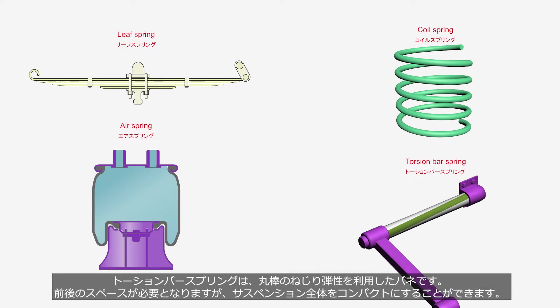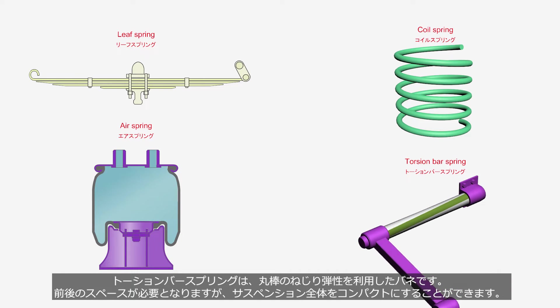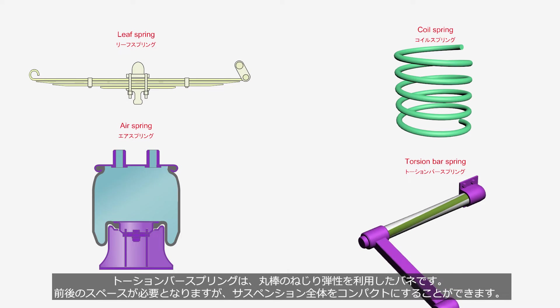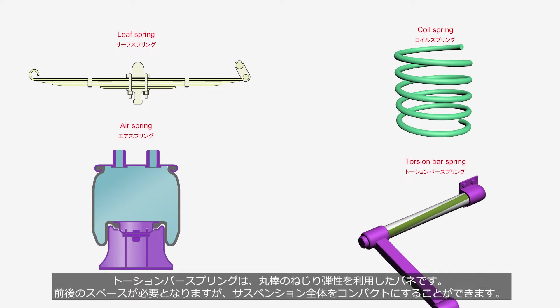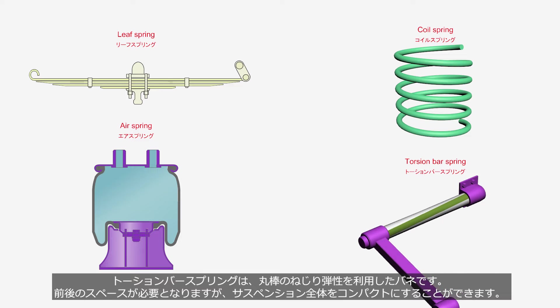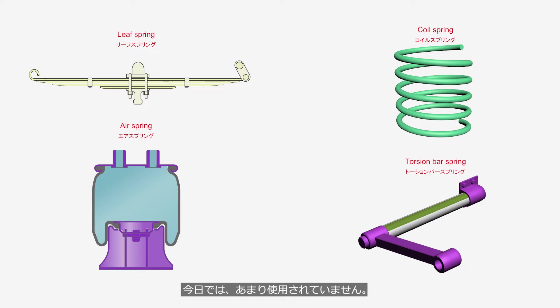Torsion bar springs utilize the torsional elasticity of a round bar. Although it requires space both in the front and rear, it allows for a compact suspension system. Today, it is not widely used.